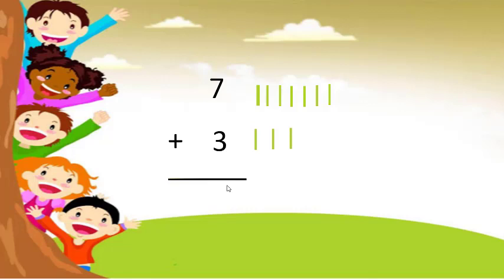Now let us count these all lines to find the answer of 7 plus 3. 1, 2, 3, 4, 5, 6, 7, 8, 9, and 10. So 10 is the answer. 7 plus 3 is equal to 10.